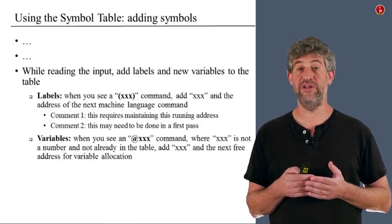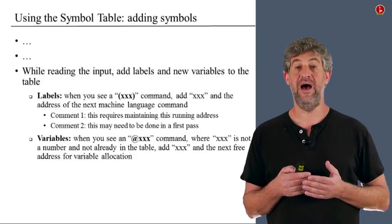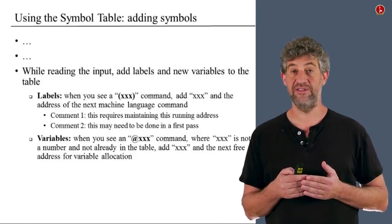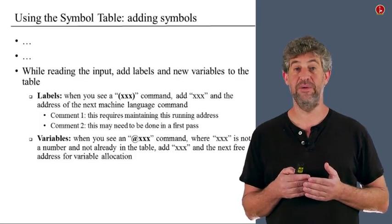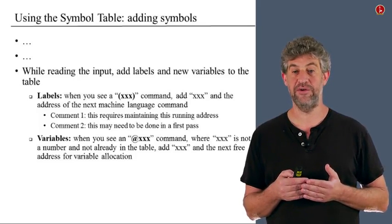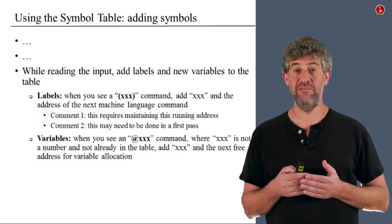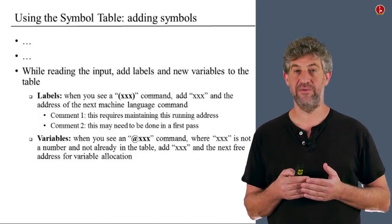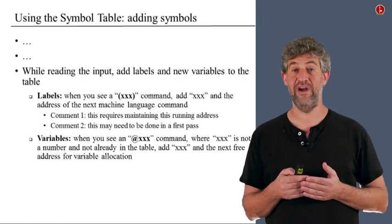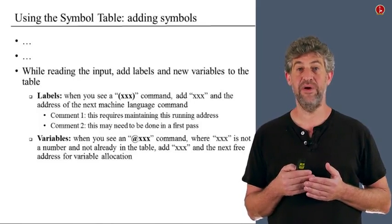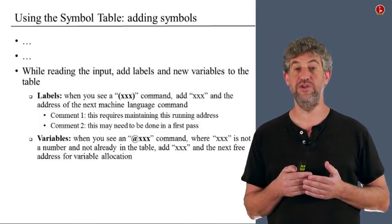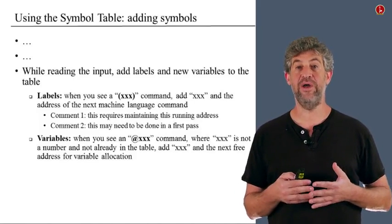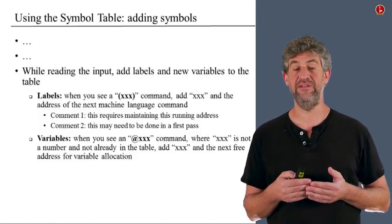For variables, the situation is slightly different. Whenever we see an A command with a new symbol we don't recognize, we know it's not a label because all labels were already entered in the first pass. If it's not in the symbol table, it means we have a new variable name, and we need to allocate it the next available address. Recall that addresses allocated to variables start at 16, then 17, 18, and so on. So whenever we see a new symbol in an A command, we allocate a new place for that symbol and enter it into the table.